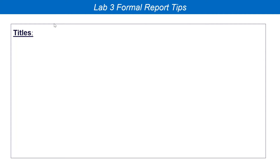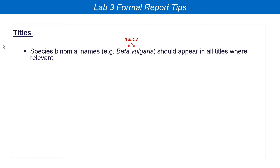You're going to have a title for your report and titles for your graphs. First of all, I keep emphasizing this: make sure you do include the species binomial name. For the beetroot, that's Beta vulgaris — that's right in the lab manual. Remember that the binomial name will be in italics, and the genus will be a capital letter, so capital B in this case.